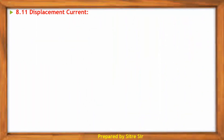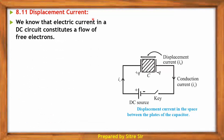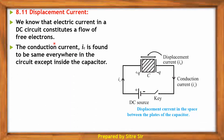Next point is displacement current. Consider this diagram. We know that electric current in a DC circuit constitutes a flow of free electrons. The conduction current IC is found to be the same everywhere in the circuit except inside the capacitor.